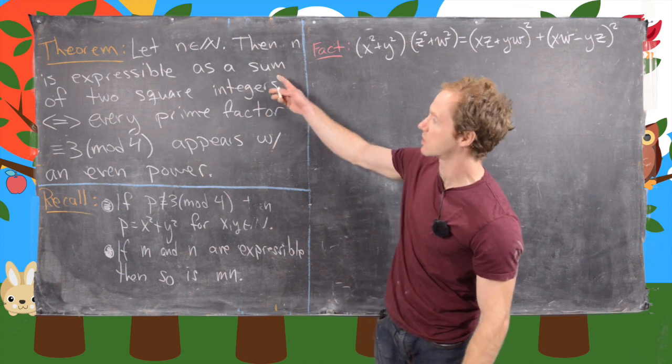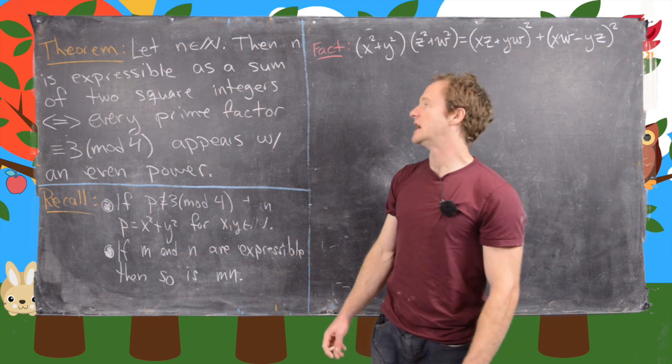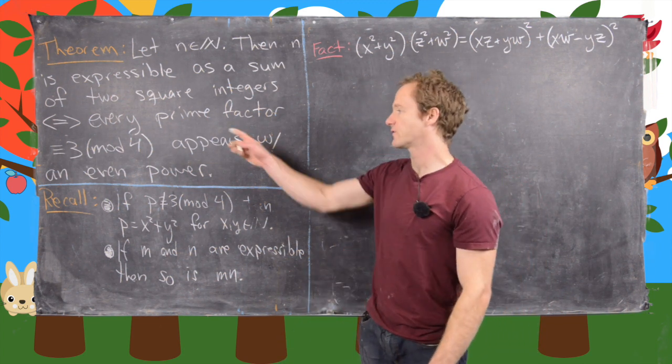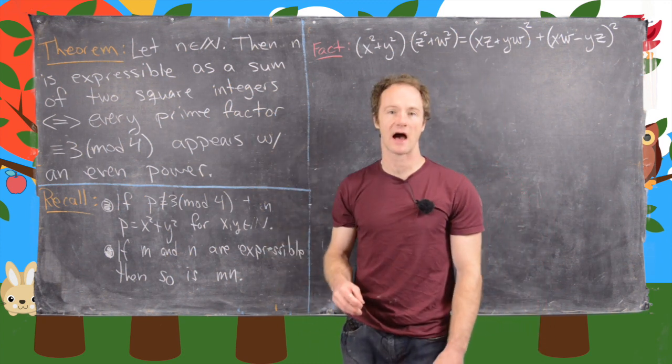Now let's just recall this theorem which was proved in the last video, which says that if we have a natural number n, it's expressible as the sum of two squares if and only if every prime factor which is congruent to 3 mod 4 appears with an even power.